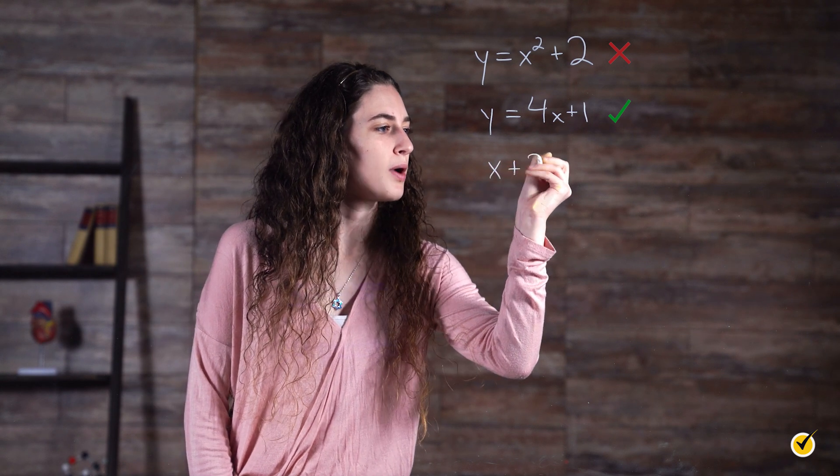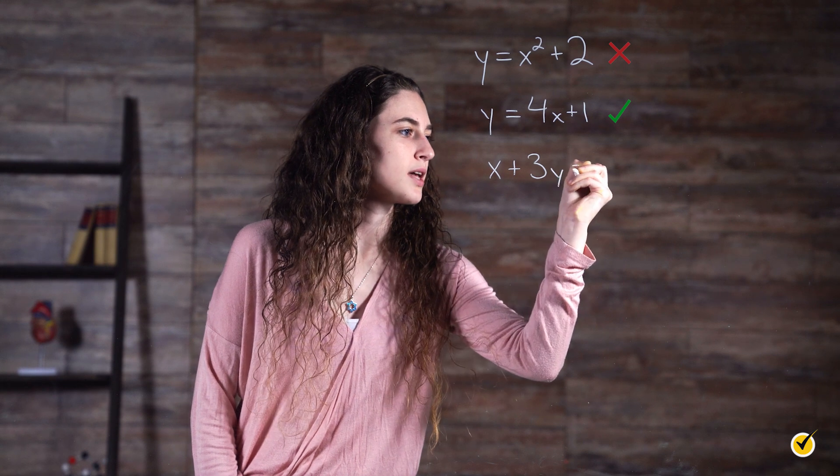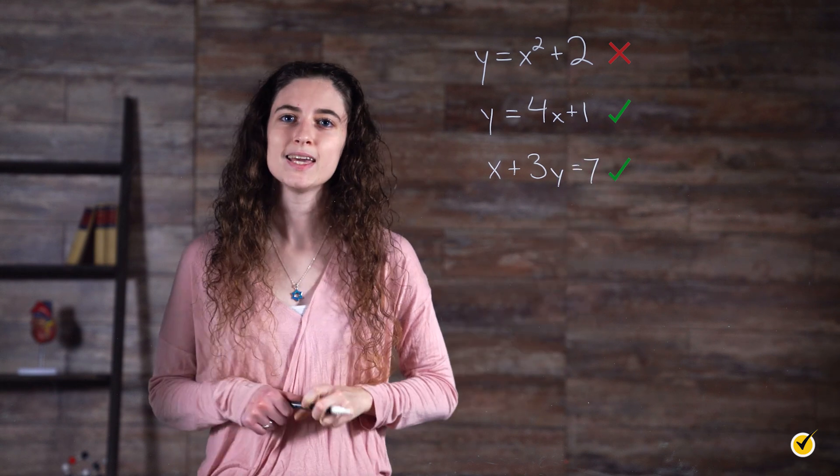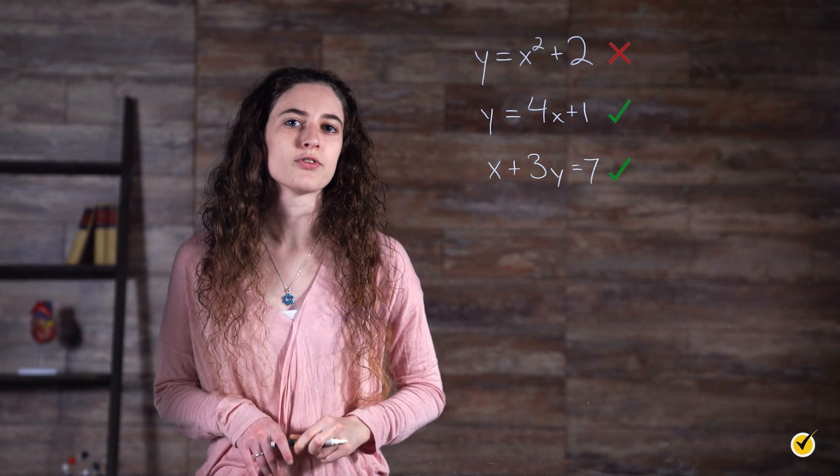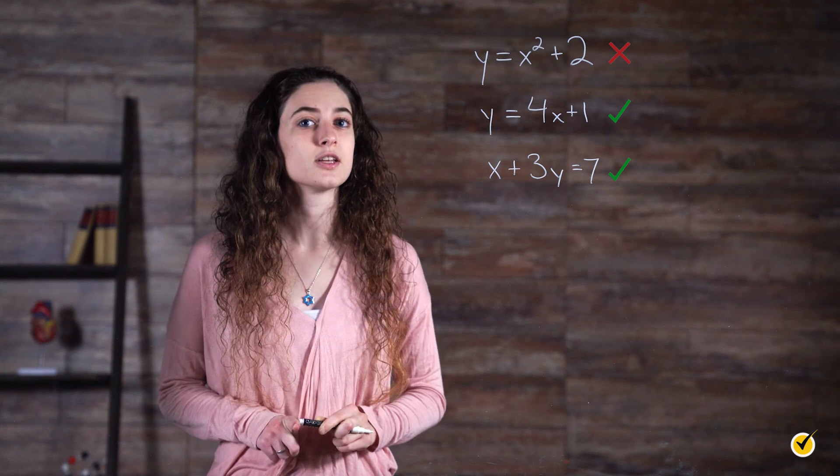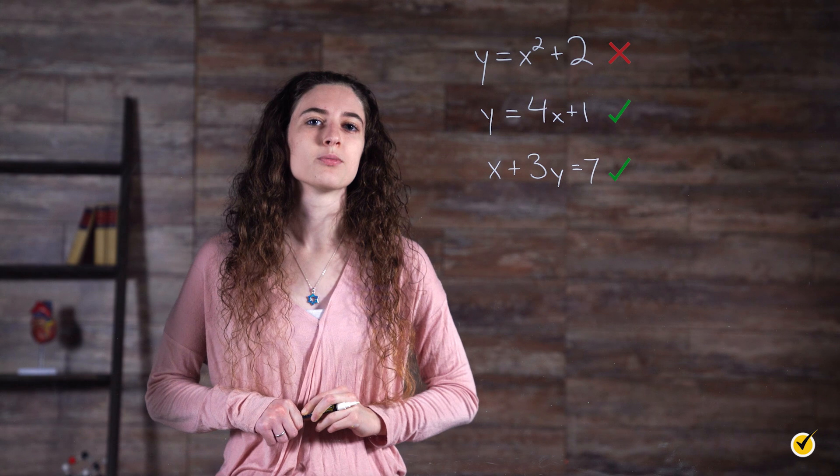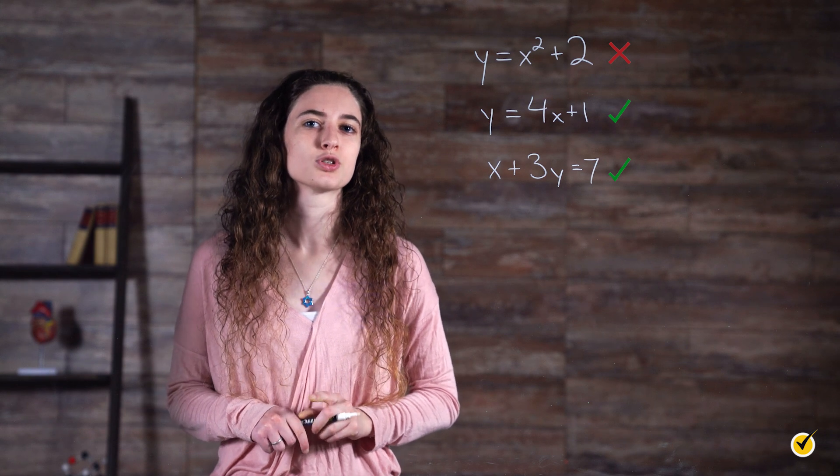x plus 3y equals 7. Yes, even though this equation looks a little different from our other ones, it is still a linear equation because there are two variables, and neither one has a root or is raised to a power.